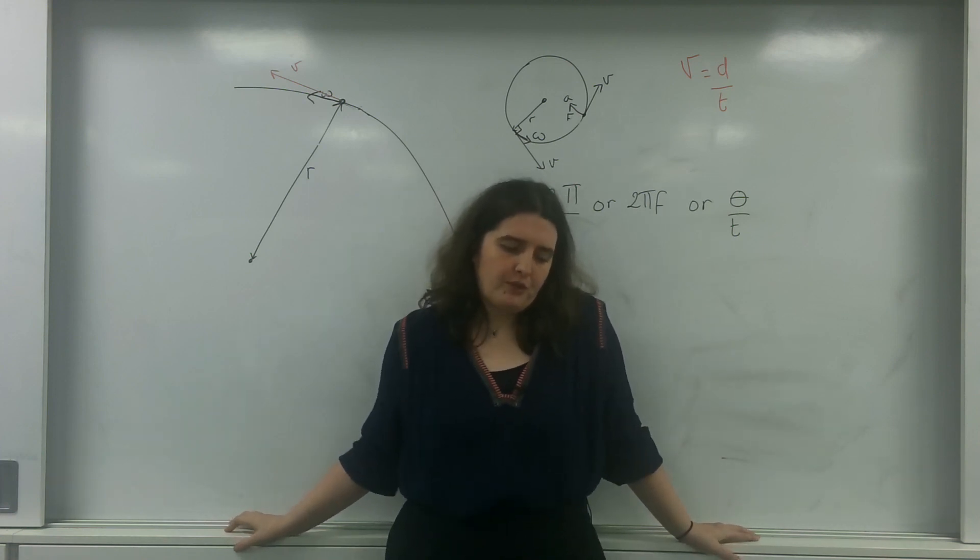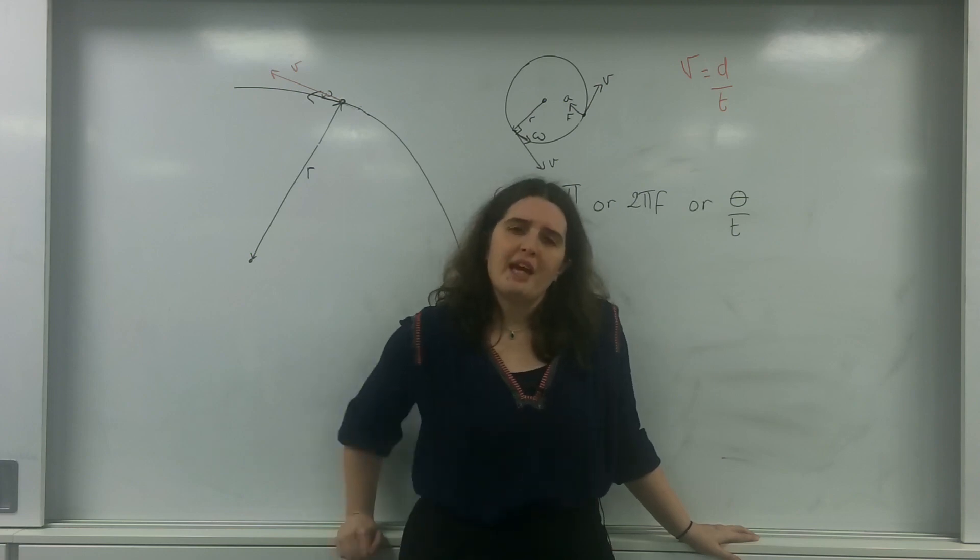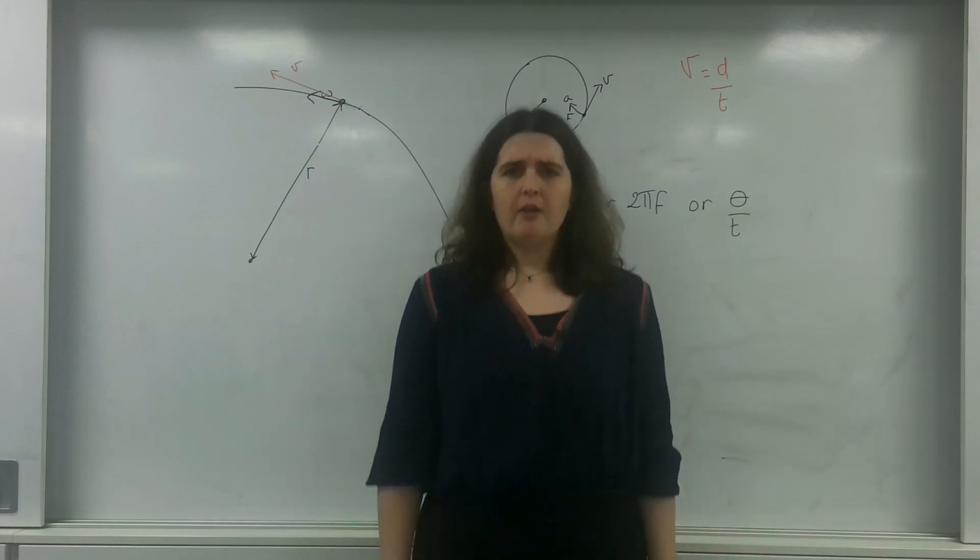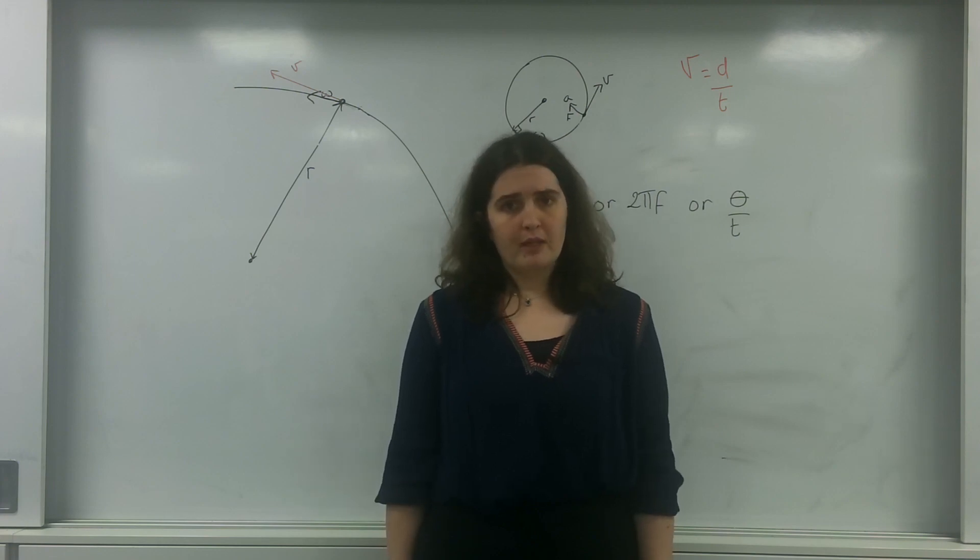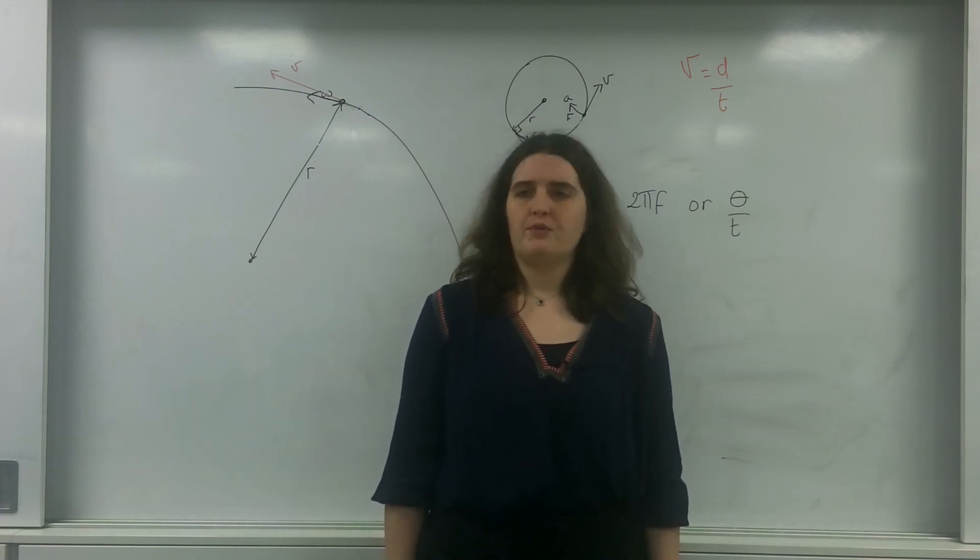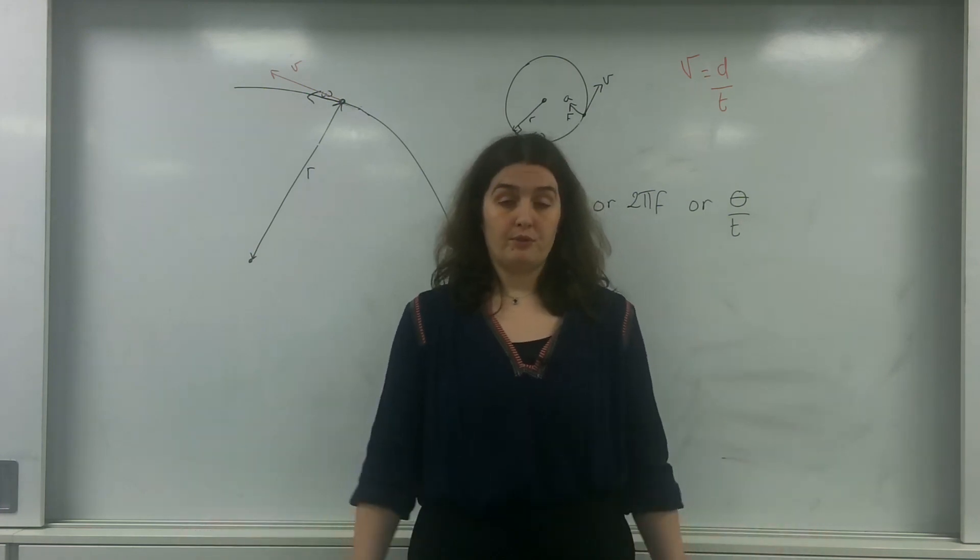Now, how an object moves in a circle. We'll start with how objects move linearly. If I'm moving linearly, to move me, at the moment I have a constant speed of zero and I've got no resultant force.